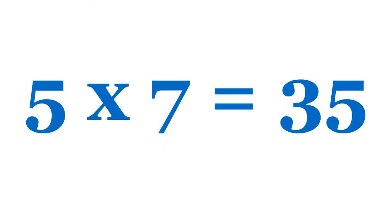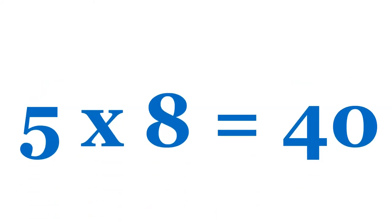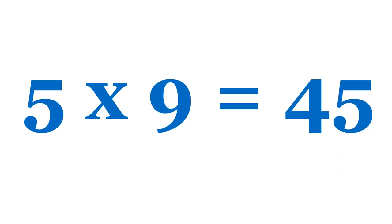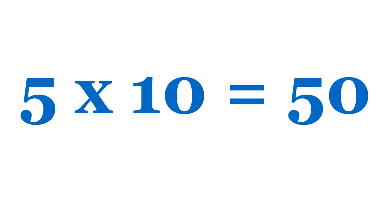Five sevens are thirty-five. Five eights are forty. Five nines are forty-five. Five tens are fifty.